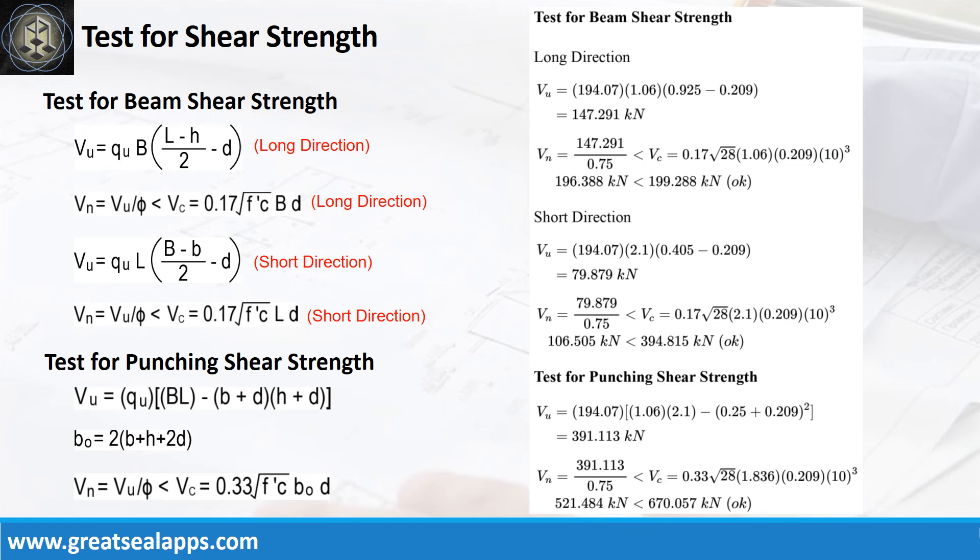The factored beam shear force at long direction is 147.291kN. The nominal force is 196.388kN less than 199.288kN concrete capacity. The factored beam shear force at short direction is 79.879kN. The nominal force is 106.505kN less than 394.815kN concrete capacity. The factored punching shear force is 391.113kN. The nominal force is 521.484kN less than 670.057kN concrete capacity.